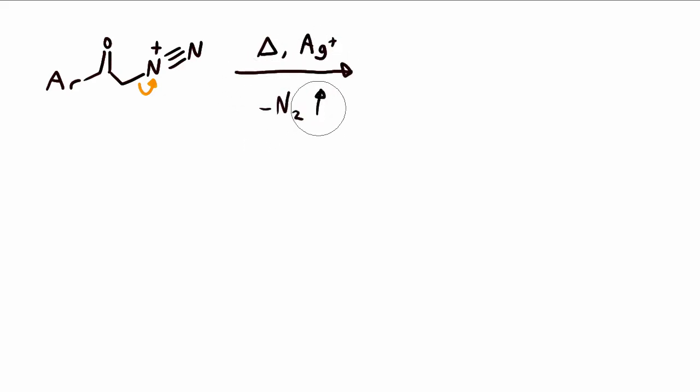And indeed, that is what happens if the molecule is treated with silver salts and heated. Nitrogen gas is evolved. That's an entropic driving force for the reaction. And what's left behind is this carbene species, which is quite interesting because this carbon only has six electrons. It's desperate to get back to fully satisfied valency and reacquire eight electrons in its outer shell.